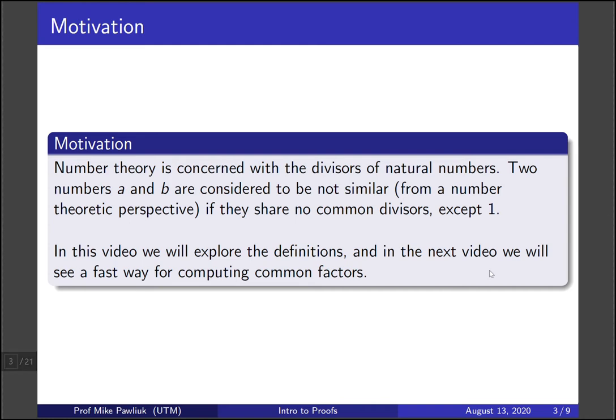Our motivation is that number theory is concerned with the divisors of natural numbers. Two natural numbers A and B are considered to be not similar from a number theory perspective if they share no common divisors except one. So two natural numbers always have at least the factor one in common, but if that's the only thing they share we'll think of them as being not similar.